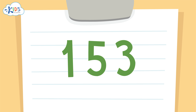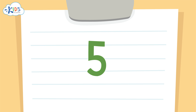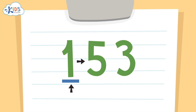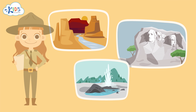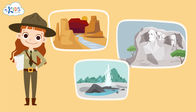The same rule applies when rounding to the hundreds place as it does when we round to the tens. Five is the key number: if it's five or higher, you round up; four or lower, you round down. You round the number in the hundreds place and make the numbers in the ones and tens places zeros.